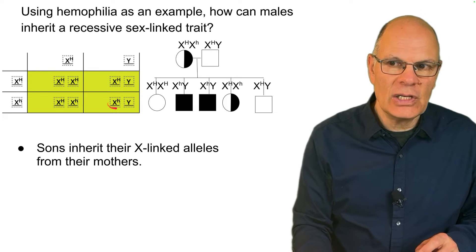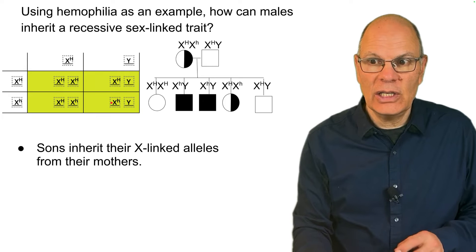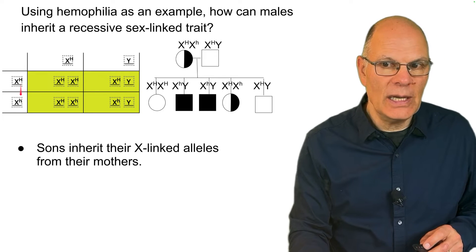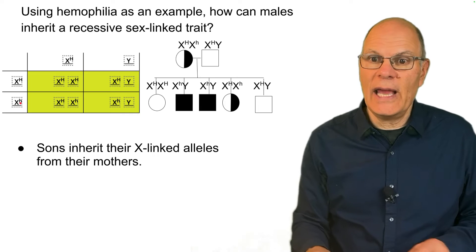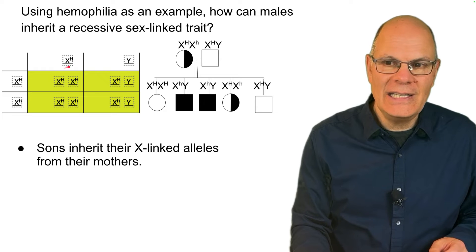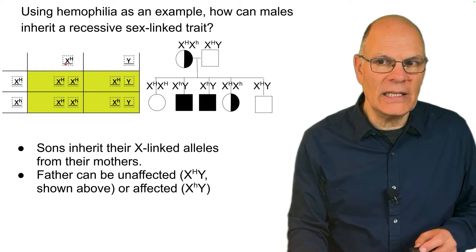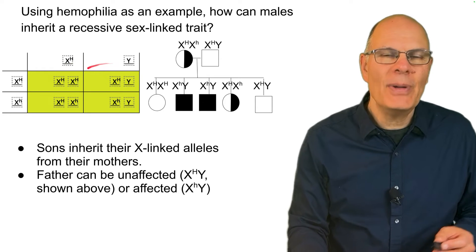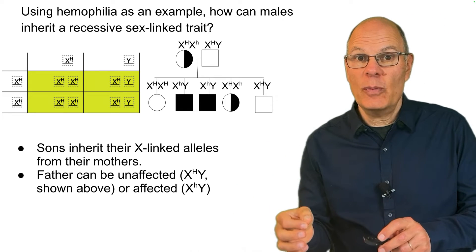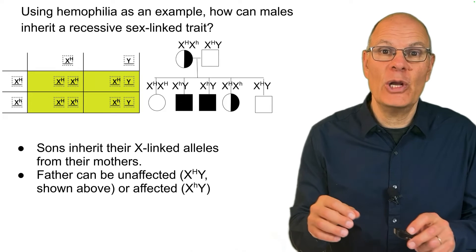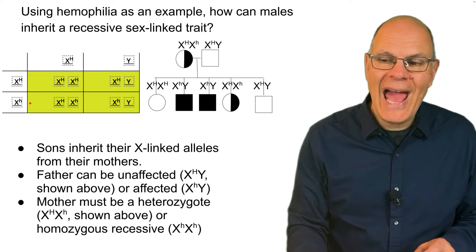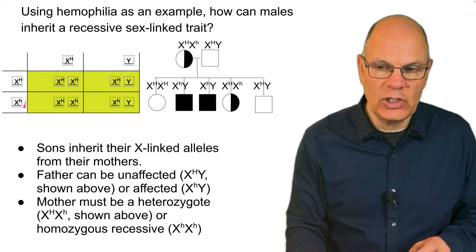How did this young man inherit that X-linked allele? From his mom. Mom is a heterozygote — X big H, X little h. She's not a hemophiliac, but she carries the allele; she's commonly known as a carrier. The dad in this case is unaffected — X big H, Y. But it doesn't matter because dads don't pass on their X chromosomes to their sons; they pass on their Y chromosomes. That's why they're sons to begin with.